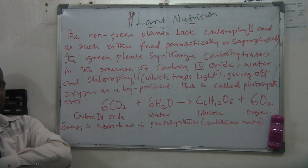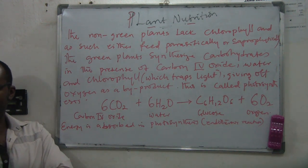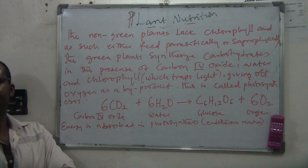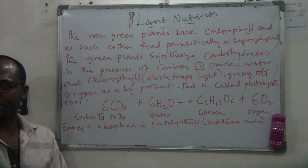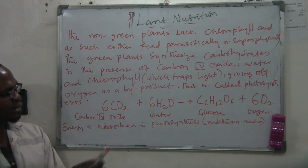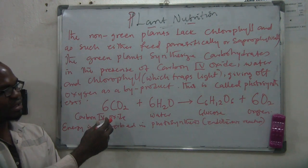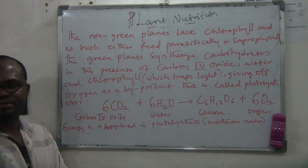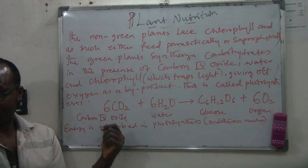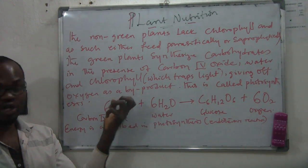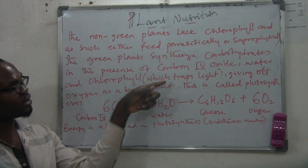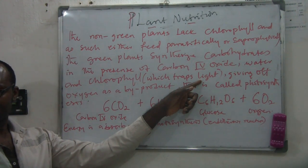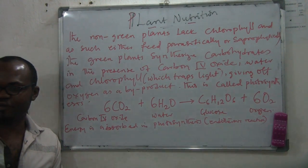If asked what materials are needed for photosynthesis to occur, the answers are: chlorophyll, carbon dioxide, water, and light. There has to be carbon dioxide, there has to be water, there has to be chlorophyll, and there has to be light. These are the things necessary for photosynthesis to occur.